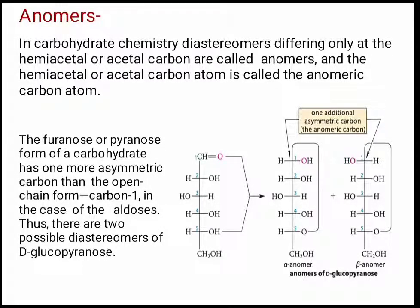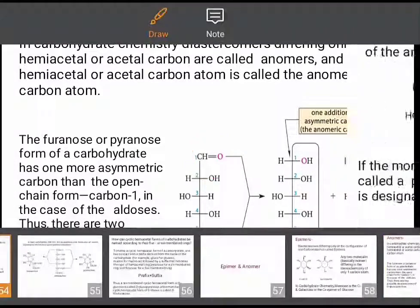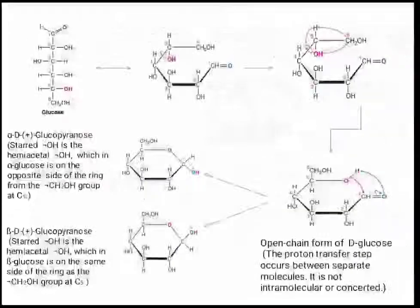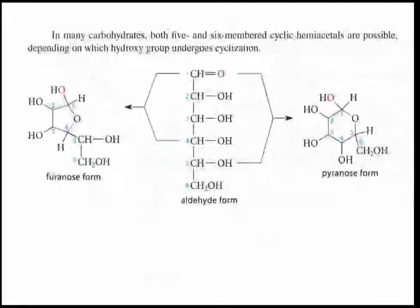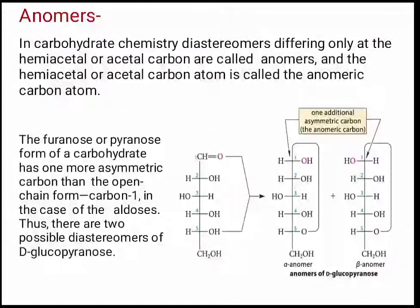Now, what are anomers? In carbohydrate chemistry, diastereomers differing only at the hemiacetal or acetal carbon are called anomers. The hemiacetal or acetal carbon atom is called the anomeric carbon. This is your aldehyde group, this is the hemiacetal carbon — this is actually called the anomeric carbon. These two are the anomers which form after ring closure into the furanose or pyranose form of a carbohydrate.